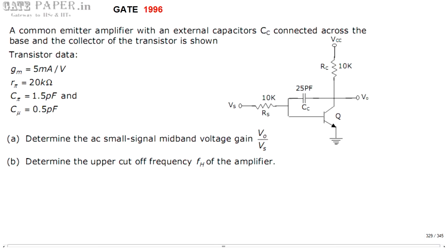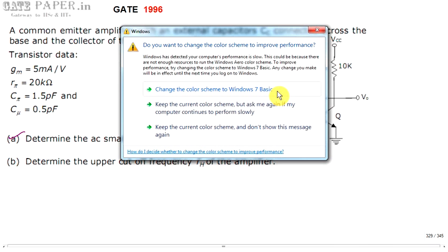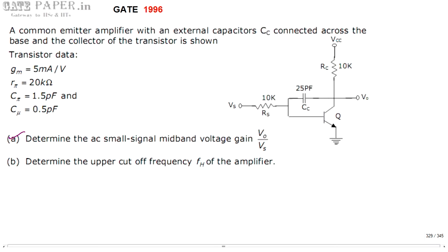We are going to calculate two important things: one is mid-band voltage gain and the second is upper cutoff frequency. First, we look at the AC small signal mid-band voltage gain. To calculate this, we have to write the AC equivalent circuit. For the AC equivalent circuit, we have to consider two important things.